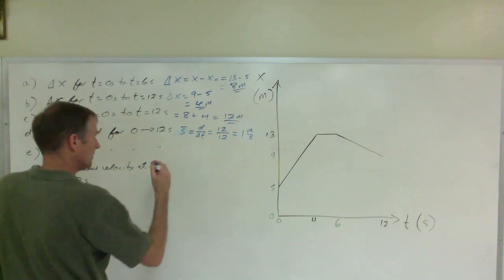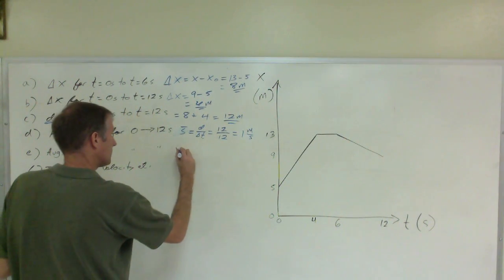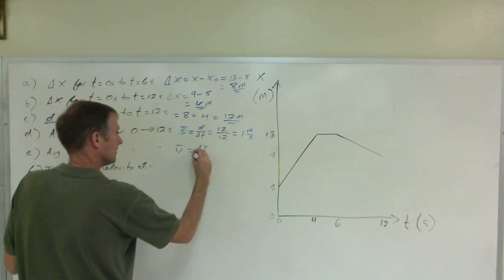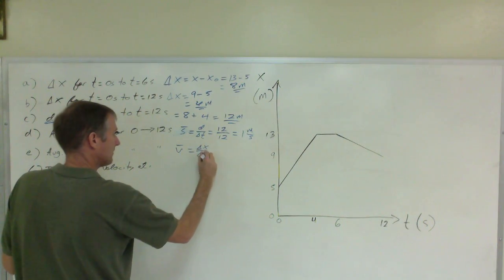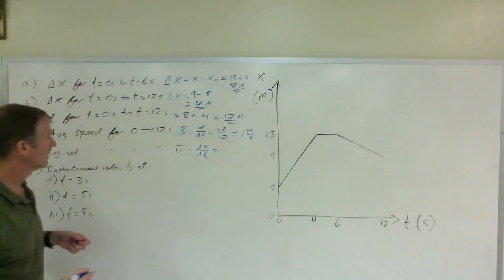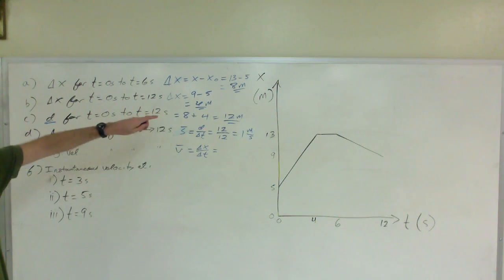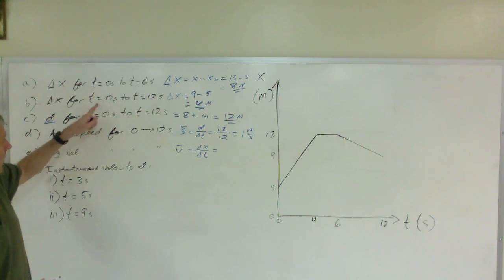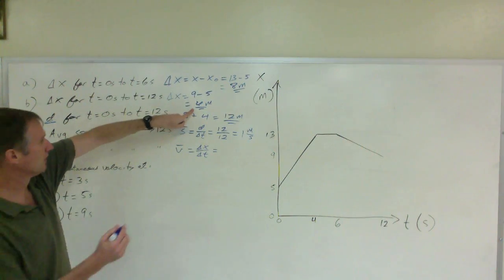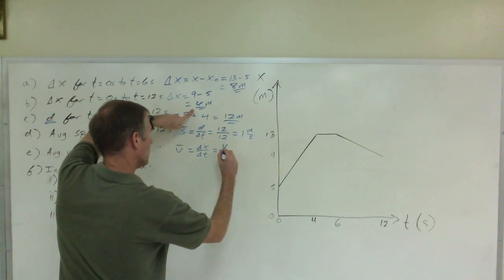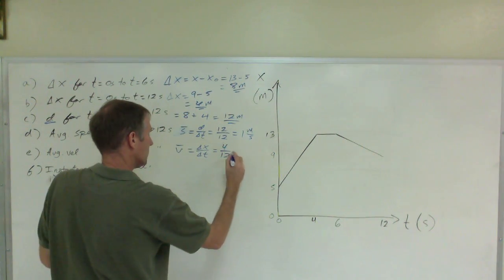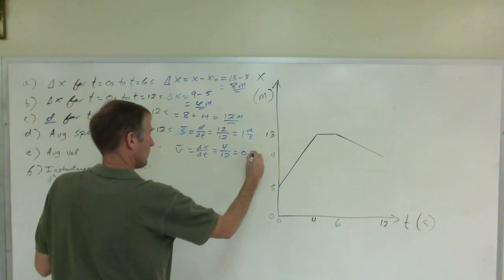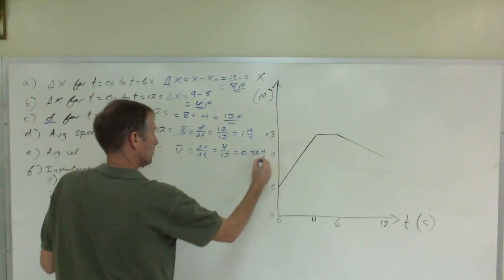Average velocity, written as V-bar, equals delta x over delta t — that's the definition of average velocity. Over the 12 seconds, delta x is 4 meters. So that's 4 divided by 12 seconds, which is one-third or approximately 0.33 meters per second.